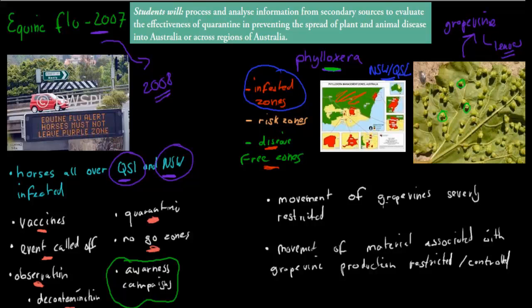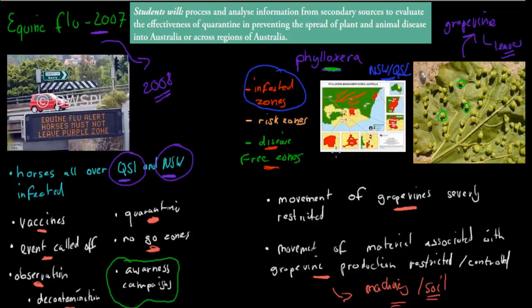What we can do is restrict the movement of grapevines. If we have grapevines from the infected areas, they're not allowed to be moved into unaffected areas. Also the movement of materials associated with the production of grapes from infected areas - for example tractors, machinery, and soil used - is also not allowed to leave the infected area and enter the non-infected area. We're keeping all the grapevines which are infected, and all material used to treat these grapevines, inside the infected area. At the moment it's doing quite well - we're keeping the Phylloxera infection in the infested areas and the disease-free zones are remaining disease-free.